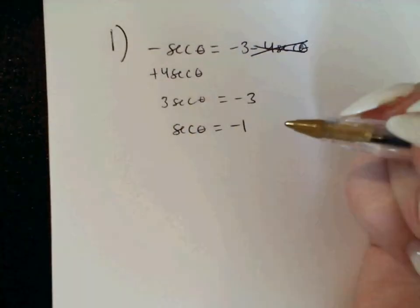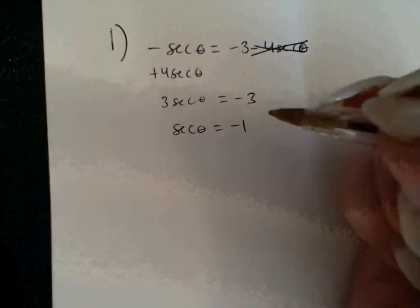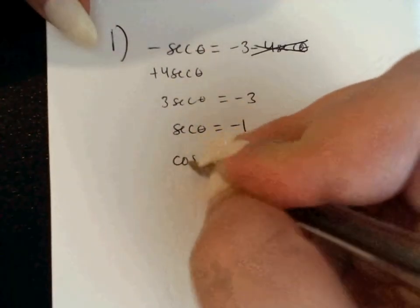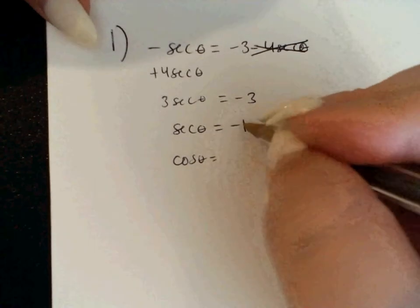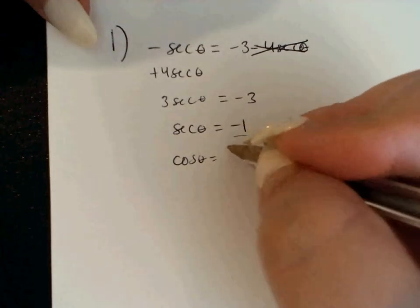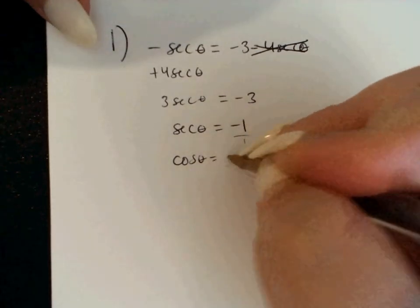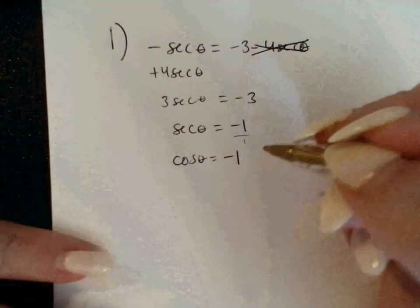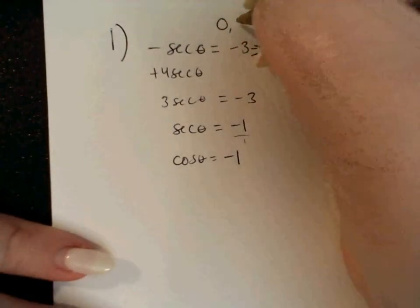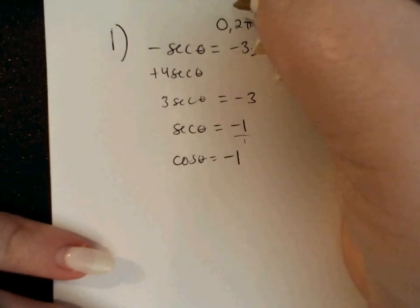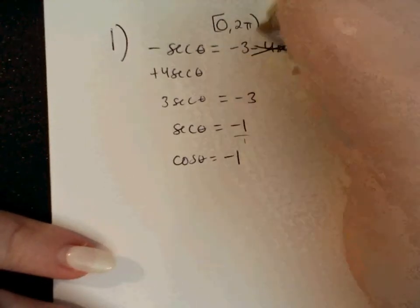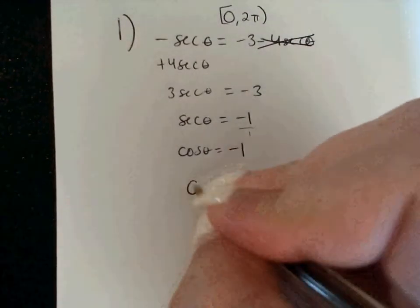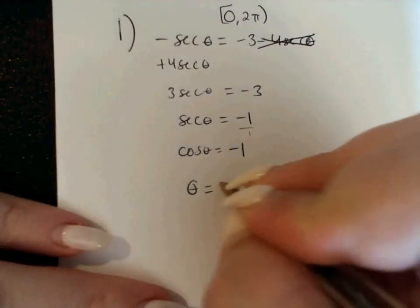If you're uncomfortable dealing with secant, you can think of it as cosine. If secant is negative 1 over 1, then cosine is 1 over negative 1, which is just negative 1. The problem says find the answers from 0 to 2π, with 0 included and 2π not included. Cosine is negative 1 only at theta equals π on the unit circle.